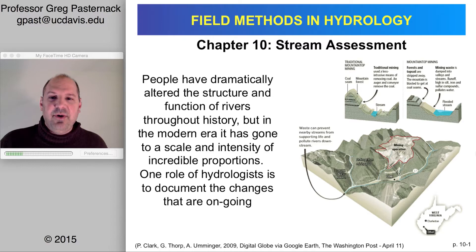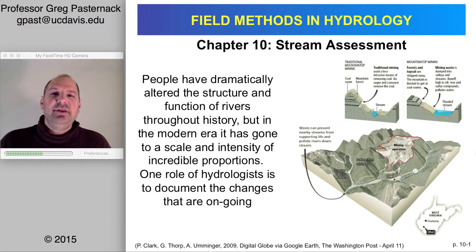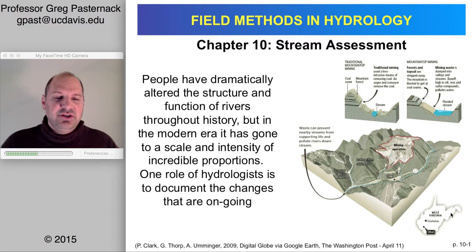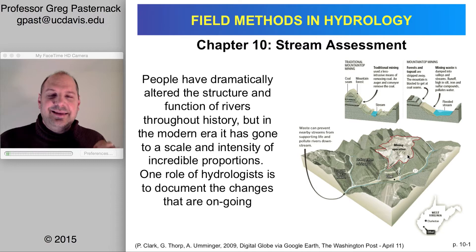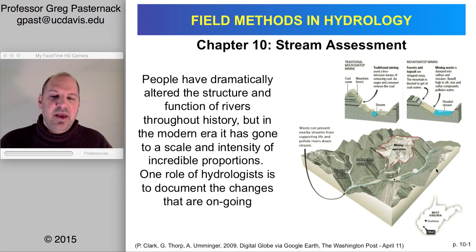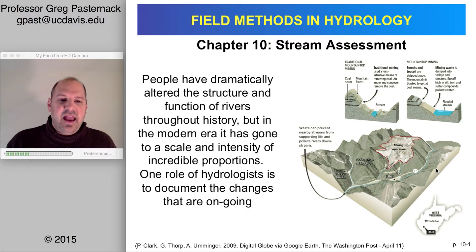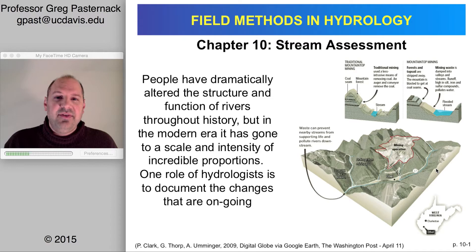People have dramatically altered the structure and function of rivers throughout history, especially in the modern era with modern machinery — producing a scale and intensity of change that is unprecedented. Humans have the ability to alter the earth at the scale of the whole earth. One example is mountaintop mining in West Virginia, where rather than digging a shaft, they remove the entire top of the mountain and fill in the valleys below. This controversial approach illustrates why we need to assess streams and determine whether such practices are causing problems.